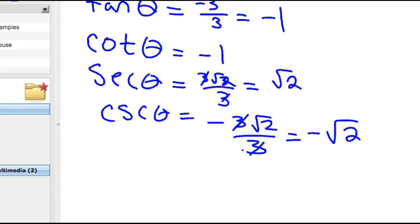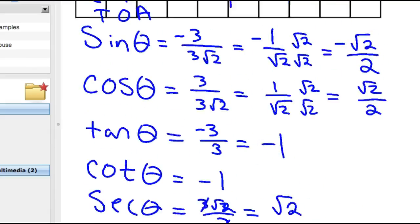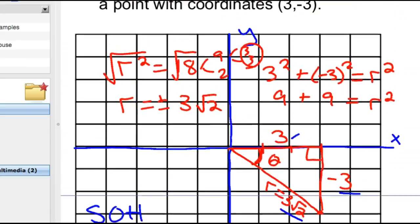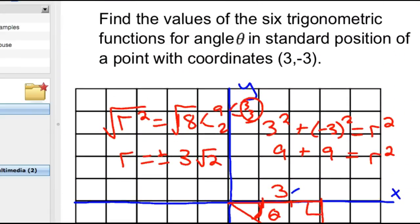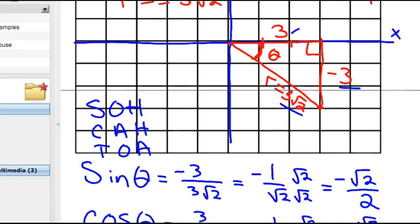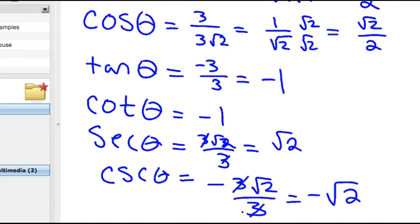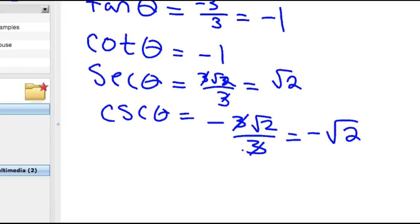And so those are your six trig functions from the point 3, -3, where theta is in the standard position of that coordinate. I hope this helps. It's another kind of standard problem that we do in pre-calc. This is mainly for my students so that they can practice this type of stuff. Hopefully it helps you guys, too. Have a good one, and see you next time.